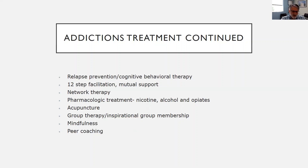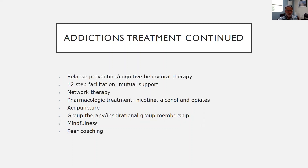Common approaches in addictions treatment include relapse prevention and cognitive behavioral therapy, which addresses high-risk situations likely to cause relapse so the person is prepared for their toughest situations. Twelve-step facilitation or mutual support involves working with a sponsor, working the steps of AA and NA. Network therapy, developed by Galanter, uses the patient's family as leverage to change their behavior — they may transport the patient to meetings, help with medical appointments, and avoid enabling addiction by having substances in the house or giving money for substances.